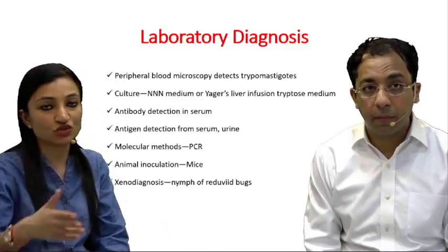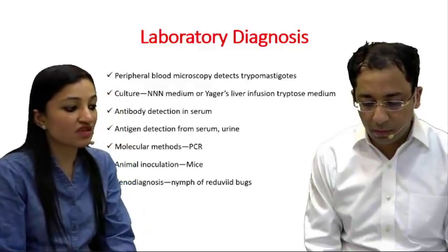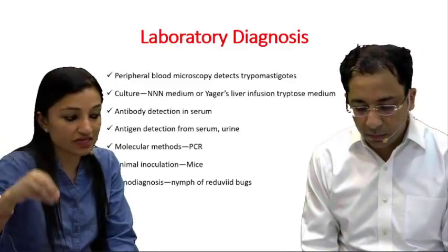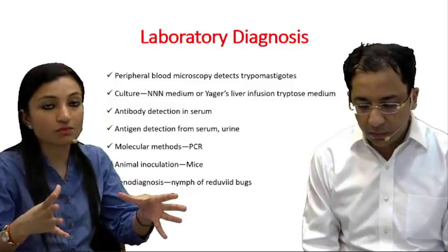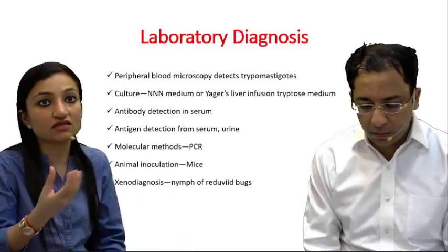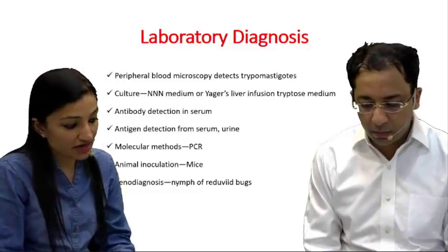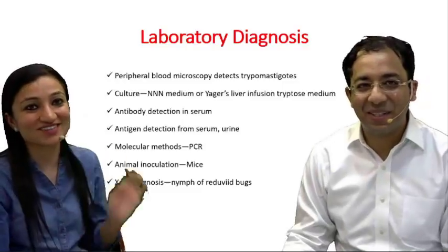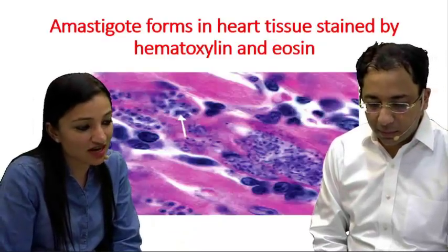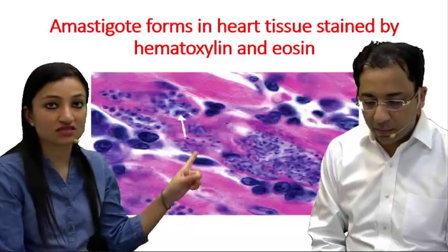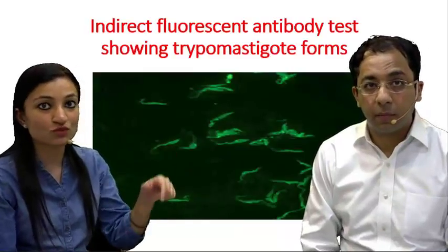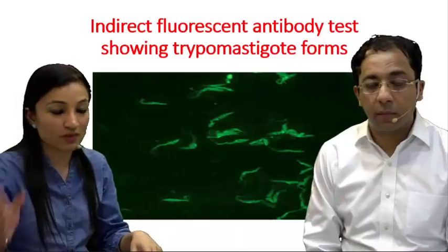Xenodiagnosis — where the patient is deliberately exposed to nymph forms of the vector and the parasite is subsequently detected in the feces of those bugs — is no longer performed. Histology shows amastigote forms in heart tissue on hematoxylin and eosin stain. The indirect fluorescent antibody test shows trypomastigote forms as green fluorescent C or U-shaped structures.